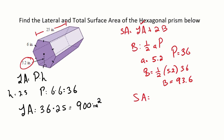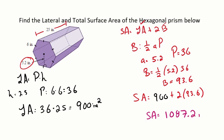For the total surface area, I plug in: lateral area of 900 plus two times 93.6. Adding it all up gives a total surface area of 1087.2 inches squared.